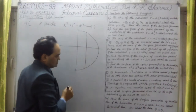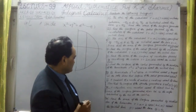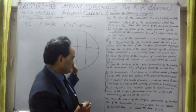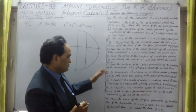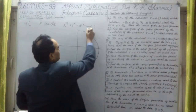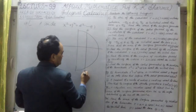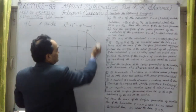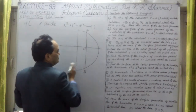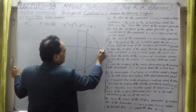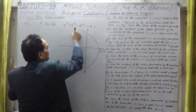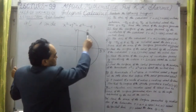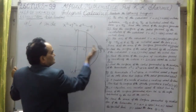A circular arc is revolved about its chord. Let me take this is the chord here, A B, let me take center is C. This arc AB is revolved about this chord AB. Let me take D here, this is the x-axis, this is O, and the y-axis here. So this circular arc is revolved about this chord.